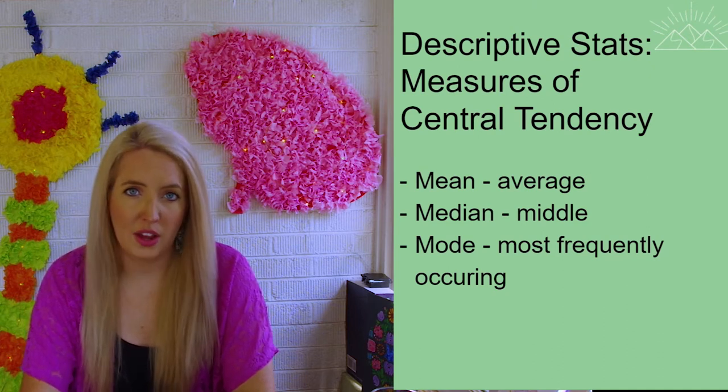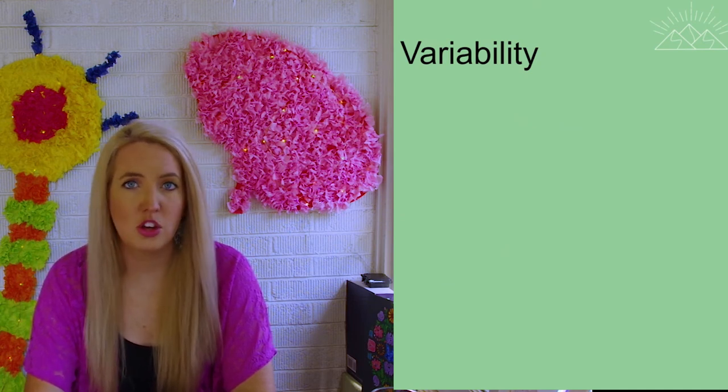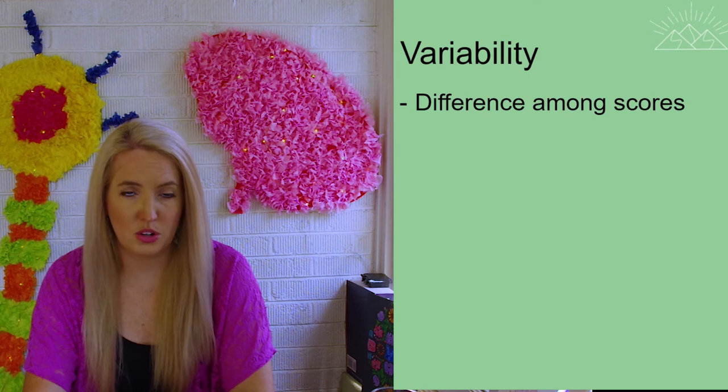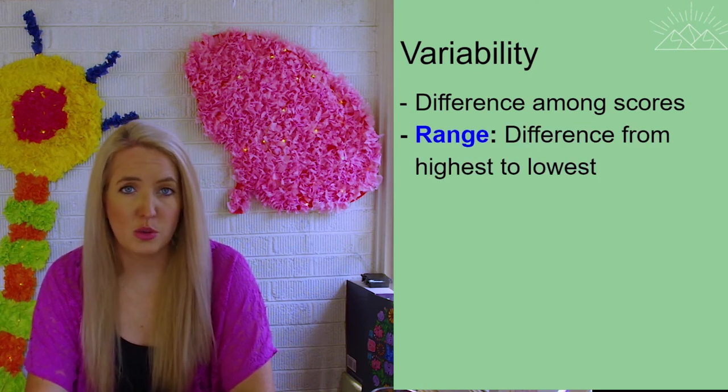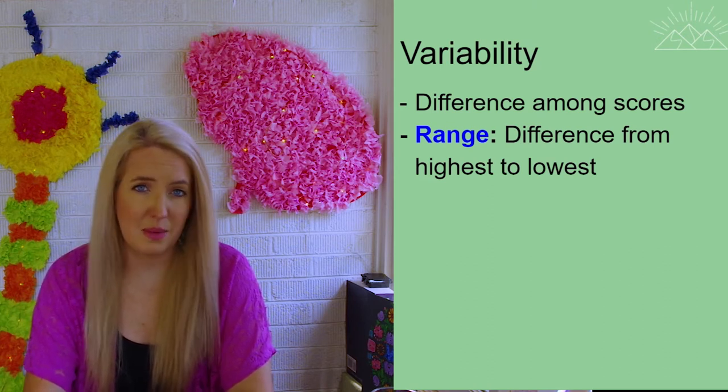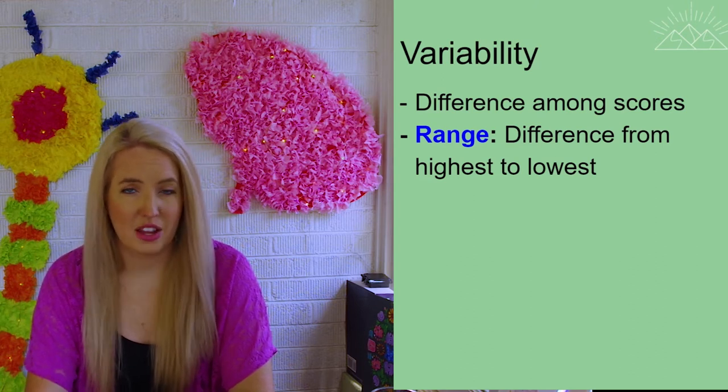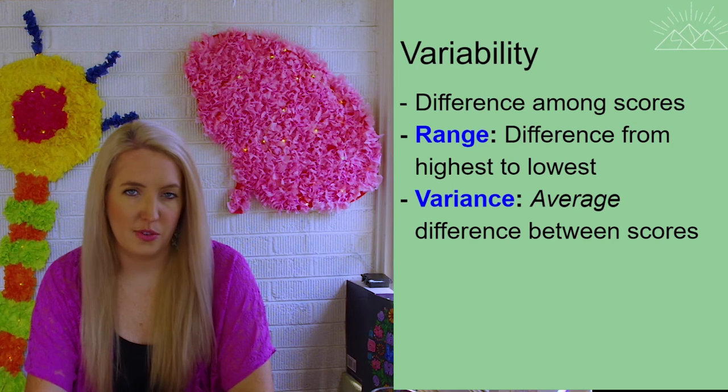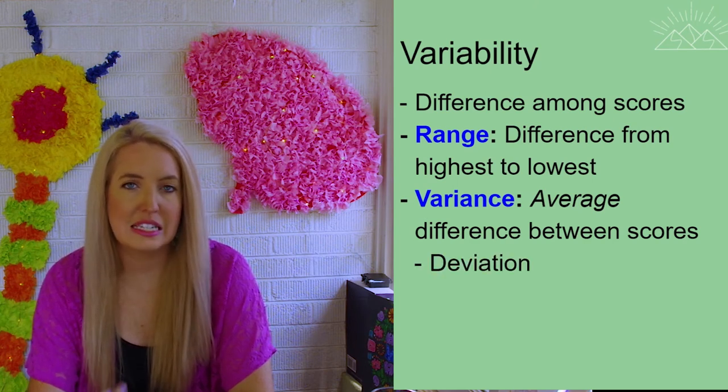Other things we can look at that are descriptive statistics include variability, which helps us look at the differences among scores. We can do that by looking at the range, so the difference between their lowest score and their highest score, which might show us again with Amy, her consistency. And we can also look at variance, which is the average difference between scores. And this will give us what we call the deviation score.